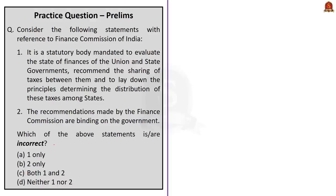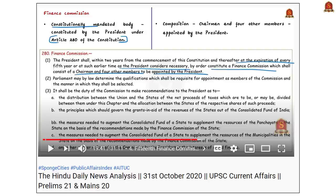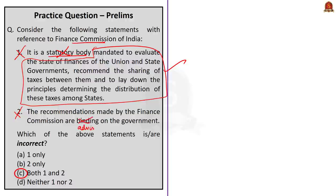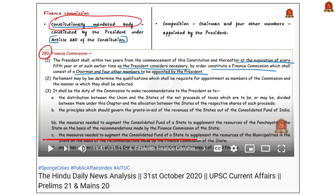The next question is about the Finance Commission of India. It is a two-statement question asking which statements are incorrect. The first statement says Finance Commission is a statutory body — this is incorrect because Finance Commission is a constitutionally mandated body set up under Article 280 of the Constitution, not a statutory body. The remaining part of the first statement — about recommending sharing of taxes and distribution principles — is correct as it is the mandate of the Finance Commission. The second statement says Finance Commission recommendations are binding on the government — also incorrect, as the recommendations are only advisory in nature and not binding on the government.